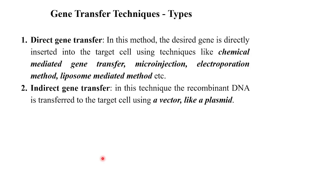There are two different types of gene transfer techniques: direct gene transfer and indirect gene transfer. In direct gene transfer, the desired gene is directly inserted into the target cell using techniques like chemical mediated gene transfer — where different chemicals are used so the gene can enter into the target cell — microinjection, electroporation, and liposome mediated method. In indirect gene transfer, it mainly uses recombinant DNA transfer using a vector like a plasmid or phage vector. These are the two main types.